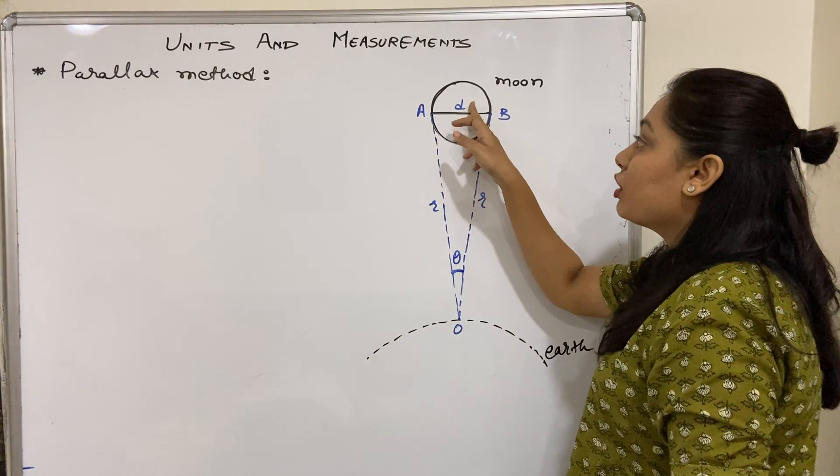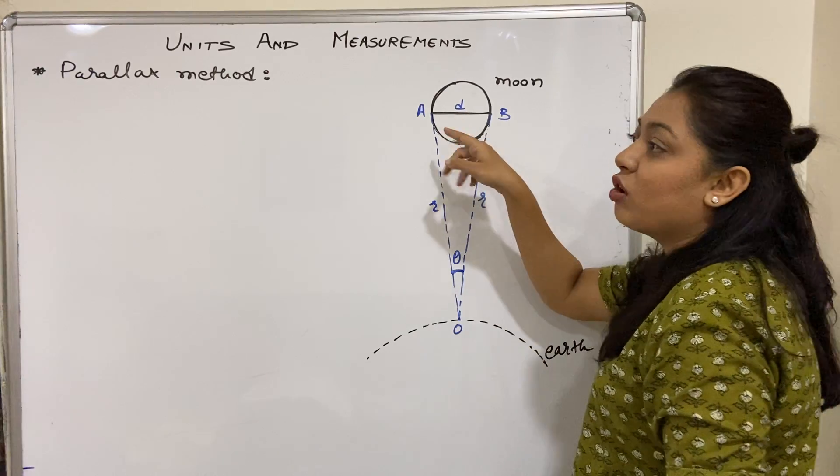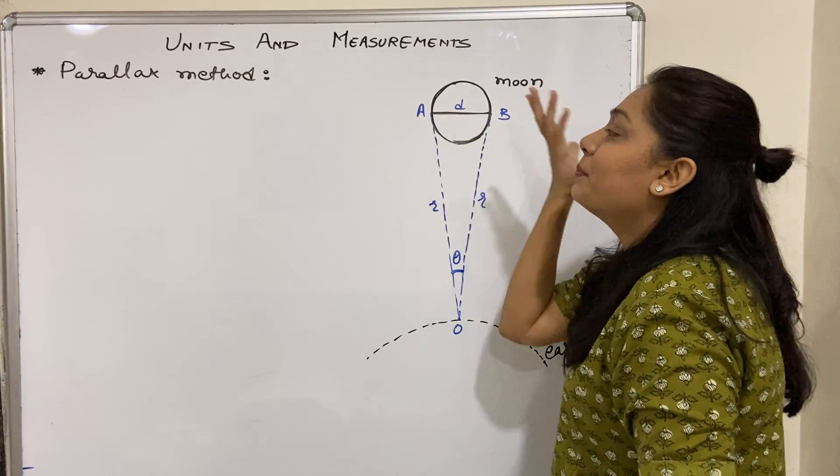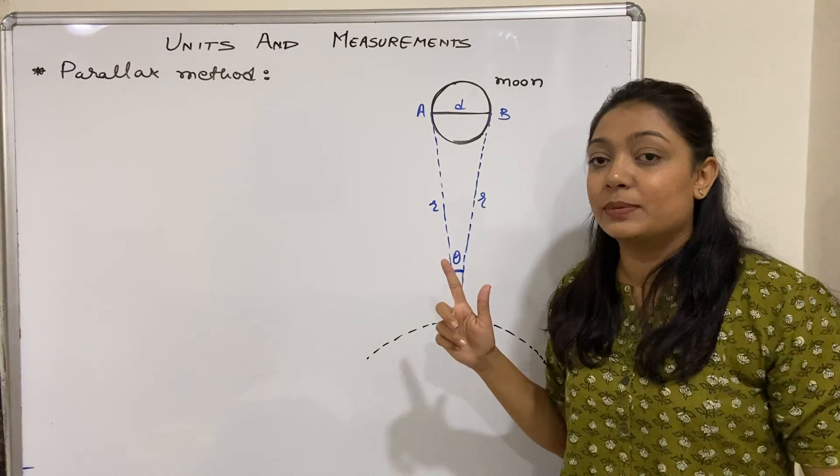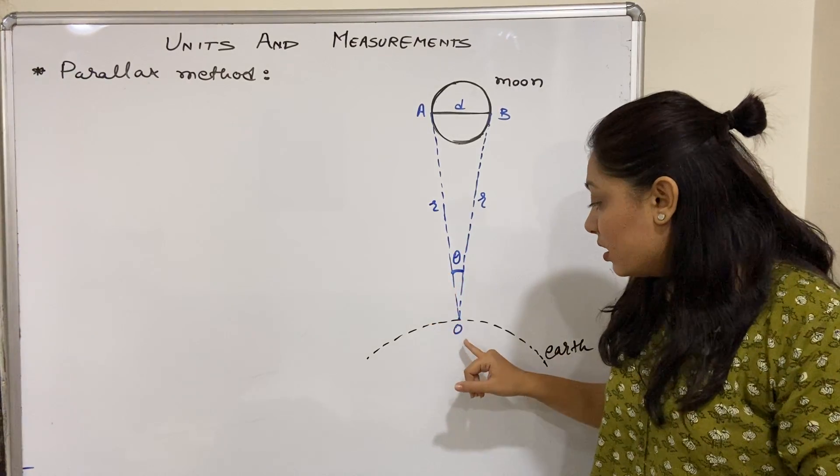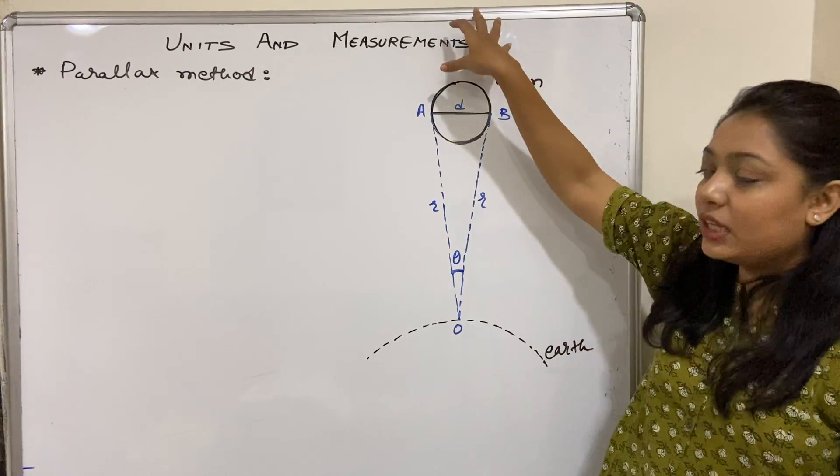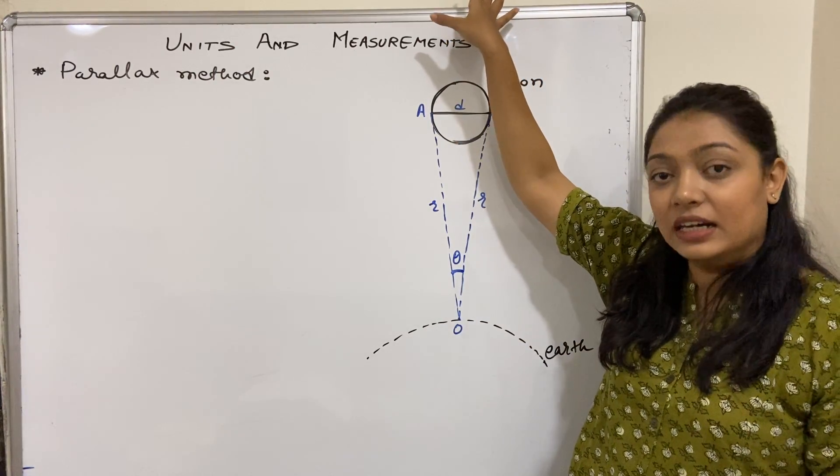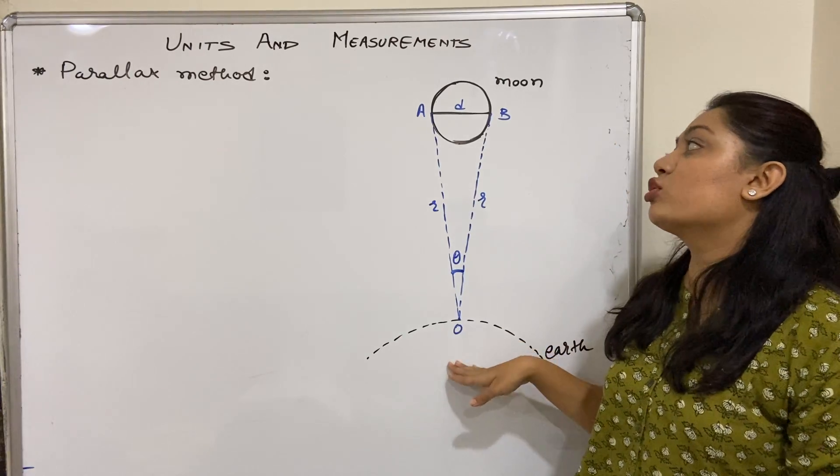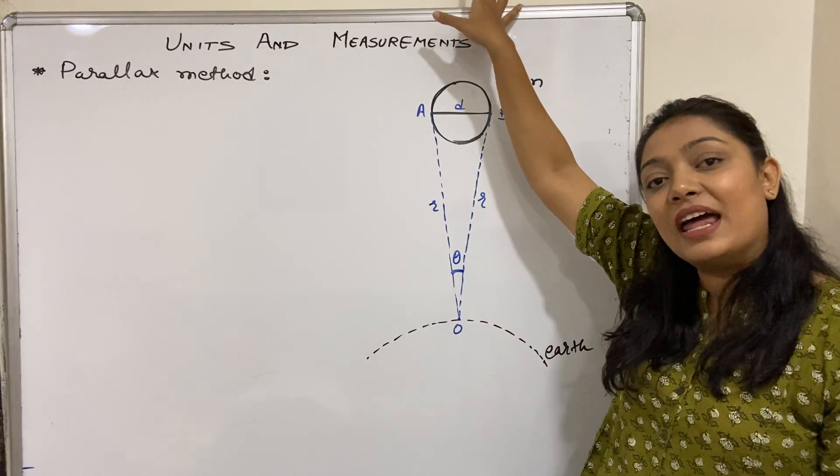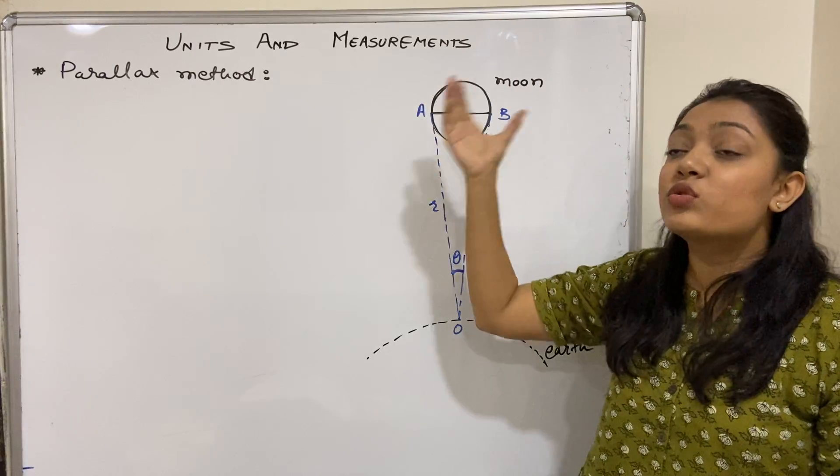So we are going to understand how to find out the diameter of a given planet or moon, whatever it is. Before we saw the parallax method used to measure distance between Earth and a different planet. Now based on Earth, we can find the diameter of whatever planet, star, or moon.